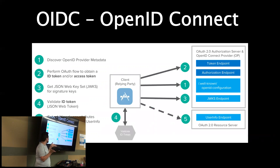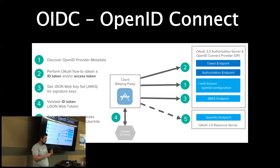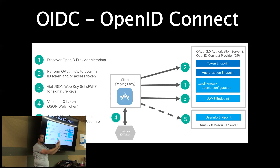OIDC in a nutshell follows these basic patterns: Discover the OpenID Provider, which gives you the metadata of where all the different endpoints are; perform the OAuth flow to obtain an ID or access token; verify with that JSON Web Token that comes back that the token is authentic; validate that the ID token is important; and then get all the user attributes with that access token. So basically, I've said I want to access a server, API, or application, and then I give context about who I am and relay that back to the resource servers.